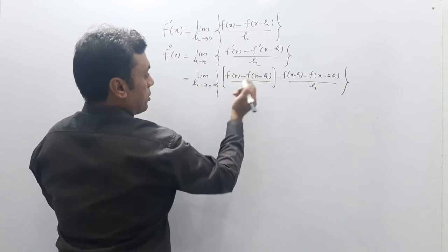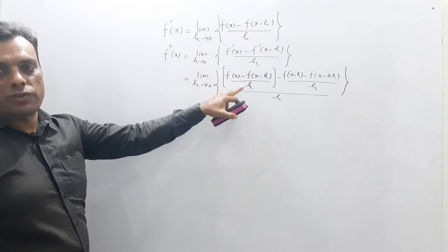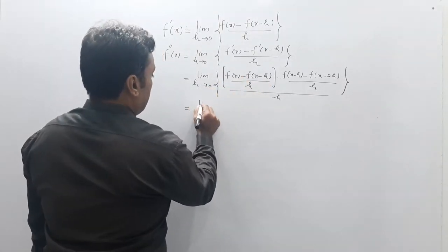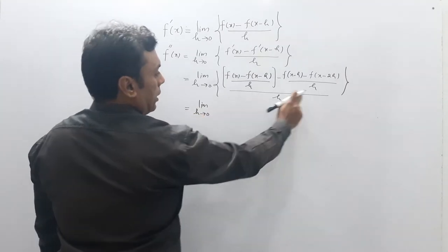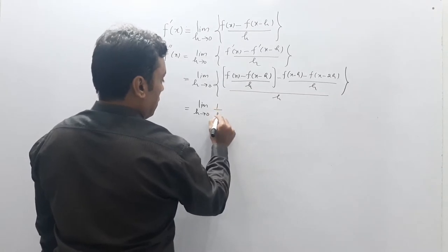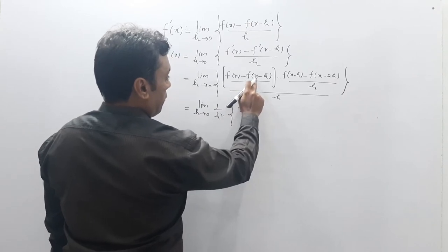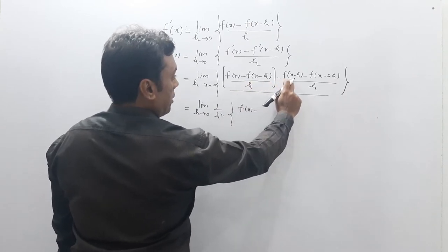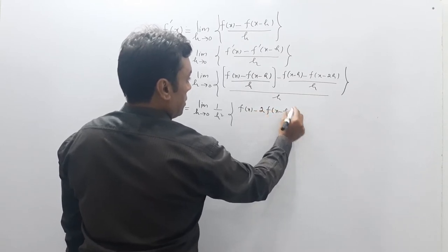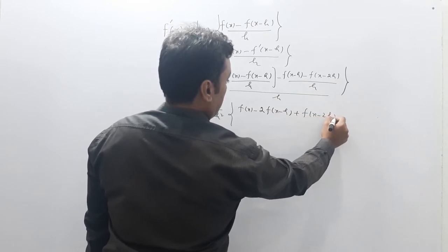Simplifying, we can take 1/h outside and combine everything over h squared. This gives: limit h→0 of (1/h²) times [f(x) minus 2f(x minus h) plus f(x minus 2h)]. This is the second derivative expressed using the backward finite difference formula applied twice.